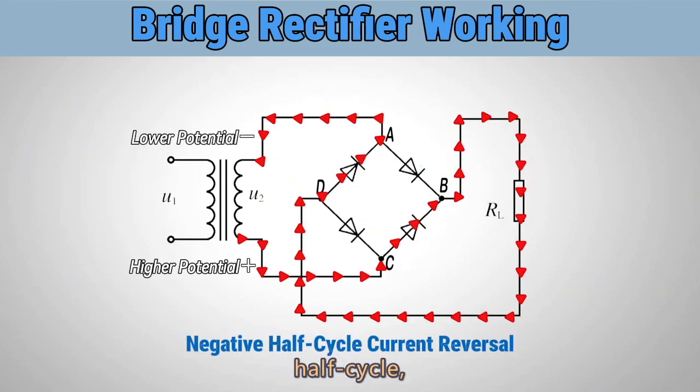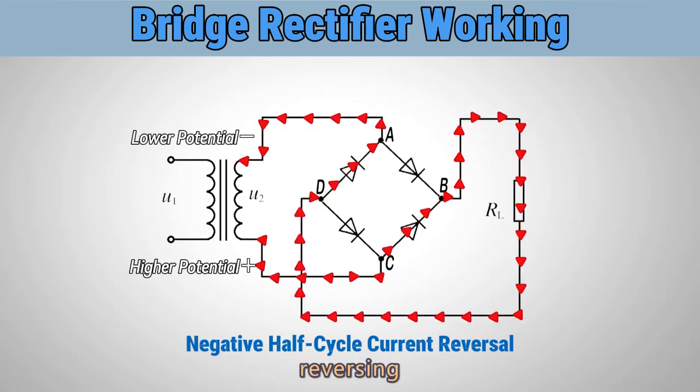During the negative half cycle, when the AC voltage is reversed, the current flows from the higher potential point to the lower potential point. Diodes at points C and B conduct, reversing the current flow path.